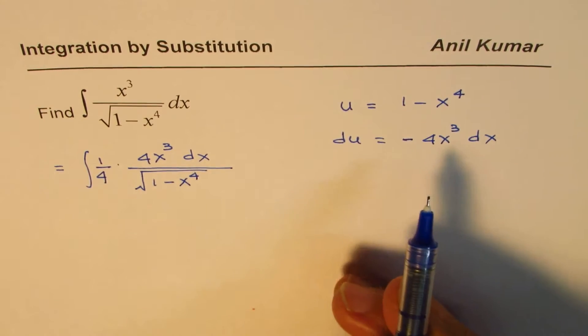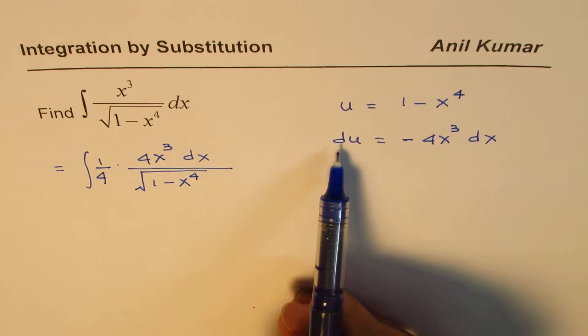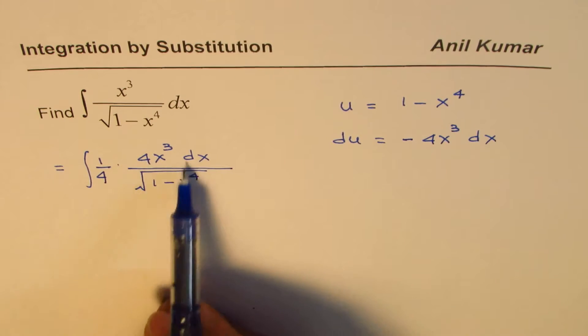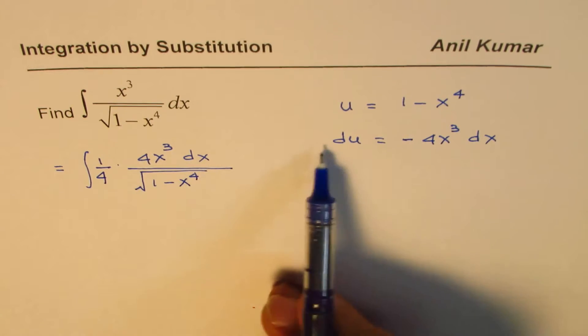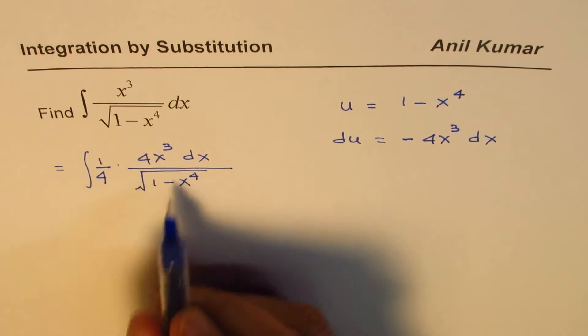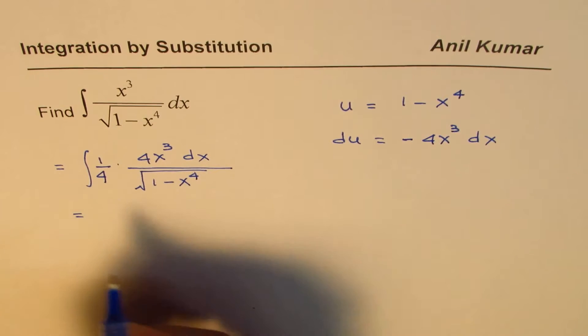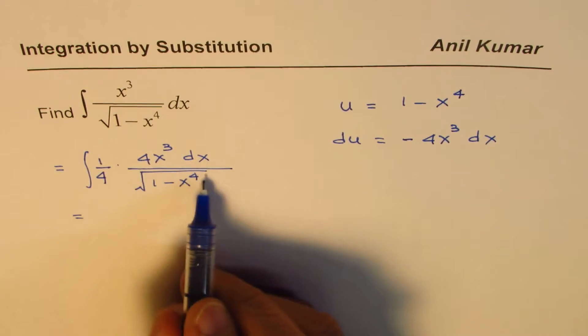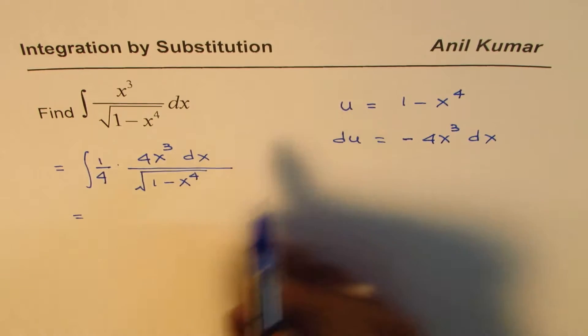So now you can replace 4x cube dx by du, so negative du in this case. So that will help us to integrate. So what we will do here is we'll do the substitution. The square root part will be replaced by u. So we have, we can take away the 4, and since it is negative,